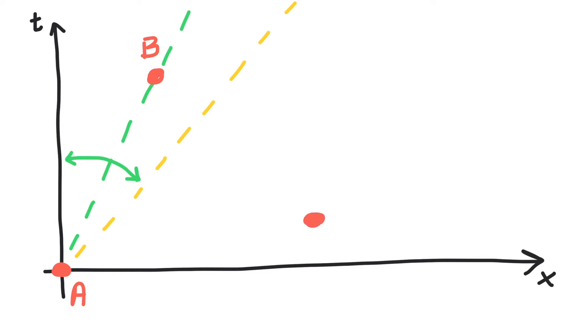What about here? If there were an event C right here, then A would have to send a signal to C traveling faster than the speed of light. According to Einstein, that's not possible.